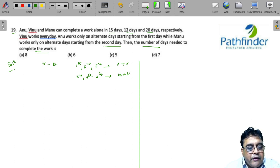We calculate the amount of work done by Anu and Vinu on odd days. So rate of work of Anu plus rate of work of Vinu is one day's work of Anu, that is 1/15, plus one day's work of Vinu, that is 1/12. And that gives you 9/60. So 9/60th fraction of the work is done by Anu and Vinu on odd days starting with 1.